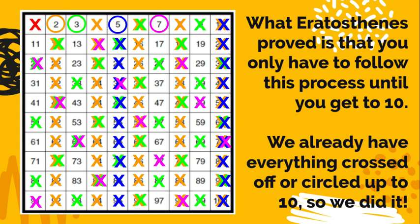So now we kind of need to think about what Eratosthenes proved. He said that you only have to follow this process until you get to 10. So if you look ahead to 10, I know we just finished 7, but look ahead to 10. We've already crossed off 8, 9, and 10. So we know those are composite numbers. So we're finished at this point.